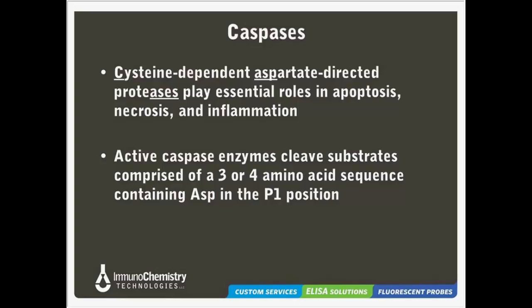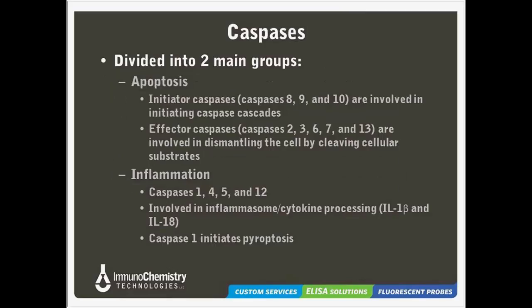Caspases are the enzymes underlying the apoptotic process. Caspases, or cysteine-dependent aspartate-directed proteases, are activated and then go on to cleave substrates leading to the eventual disassembly of the cell. There are two different groups of caspases: those involved in apoptosis and those involved in inflammation. Initiator caspases regulate apoptosis upstream by initiating caspase cascades, while effector caspases are responsible for proteolytic cleavages that lead to cell disassembly. Inflammation is heavily dependent on the activity of caspase-1, which is associated with inflammasome activity and is a key housekeeping enzyme in its conversion of pro-interleukin-1 beta protein into the active interleukin-1 beta cytokine.